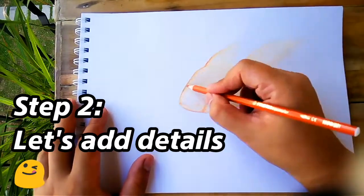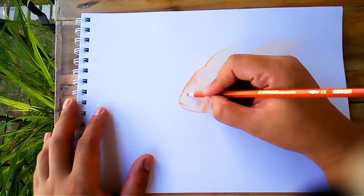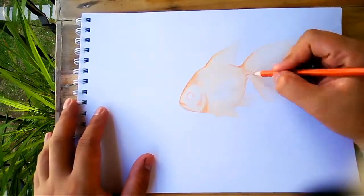And now for step two, we will be adding the details using the orange aqua color pencil.